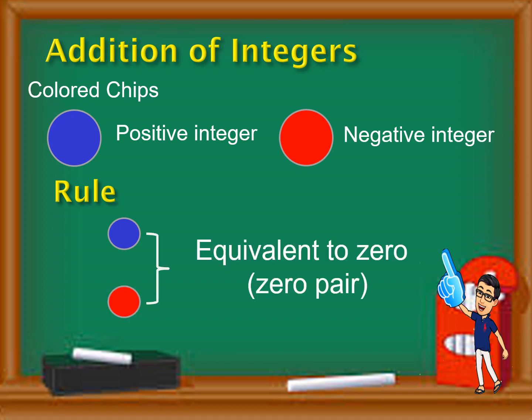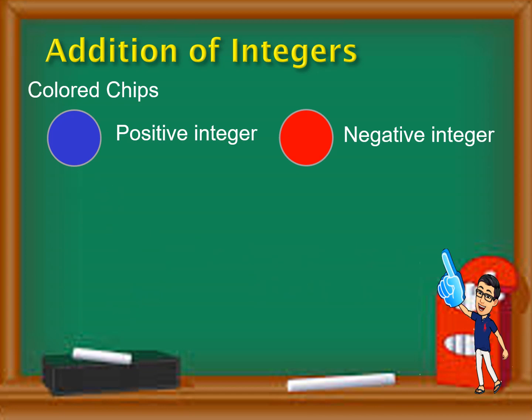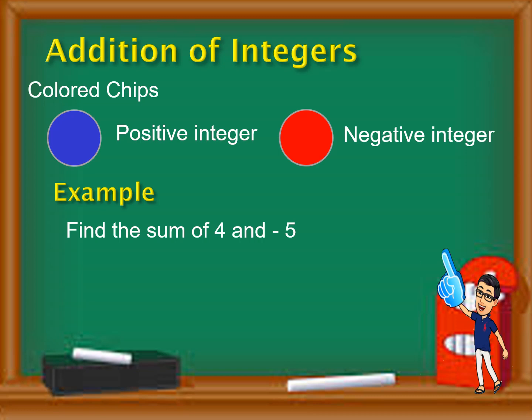Let's see the rule: one blue chip and one red chip is equivalent to zero, and we call that a zero pair. That's the important part of this modeling presentation — we need to pair a red and a blue chip so that we consider that as equivalent to zero.